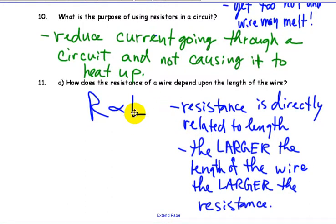Now there are a few things that resistance is related to. First, resistance is directly related to the length of the conductor or length of the wire. As the length increases, the resistance increases. So the larger the length of the wire, the larger the resistance.